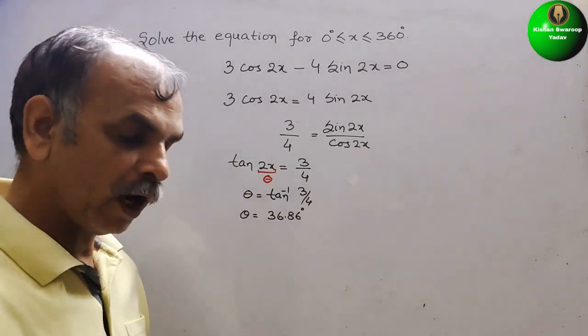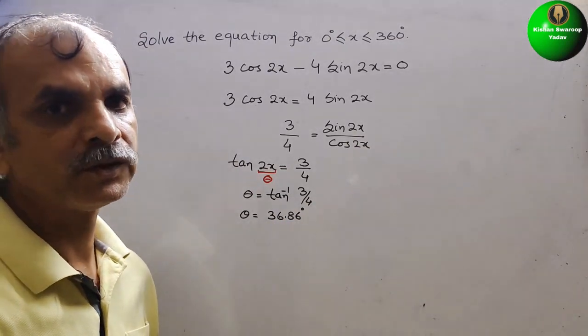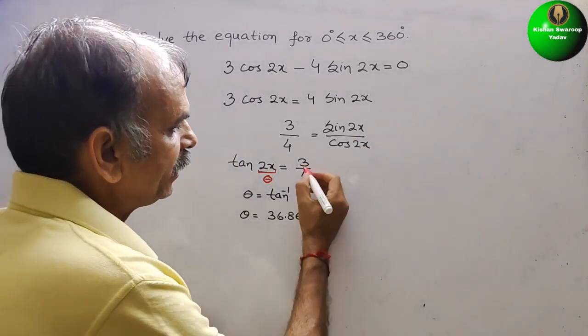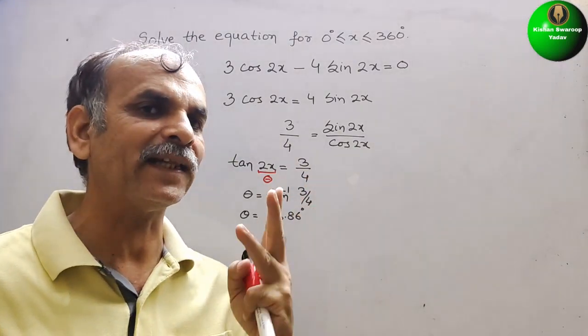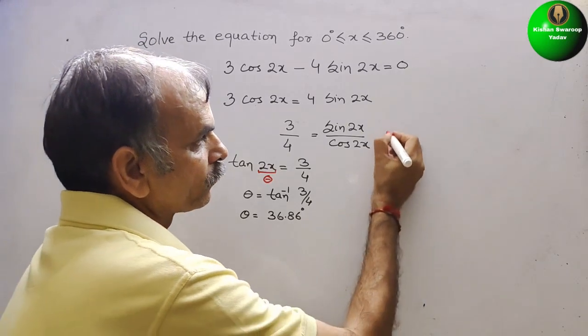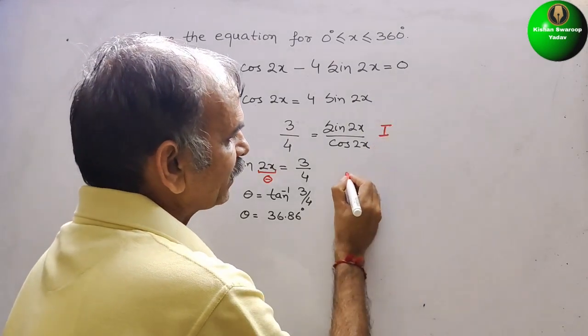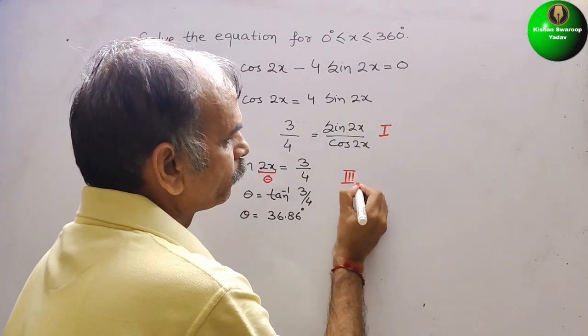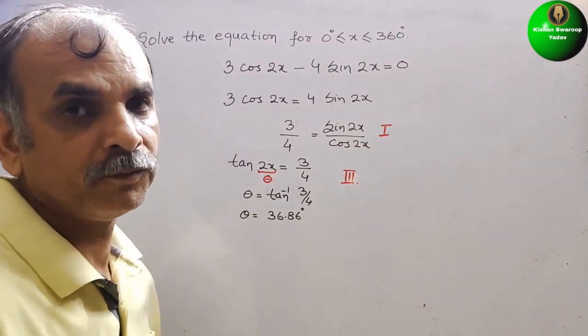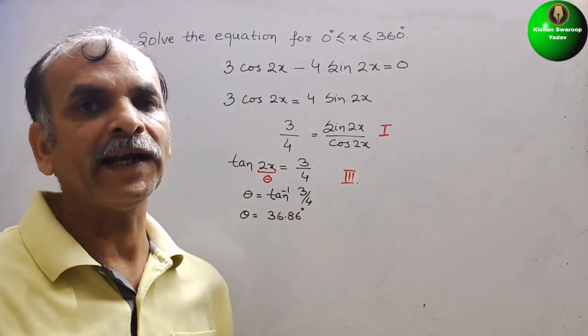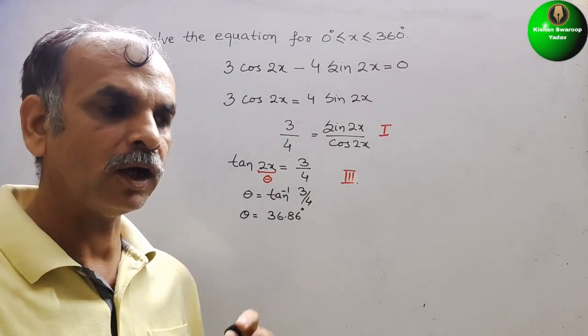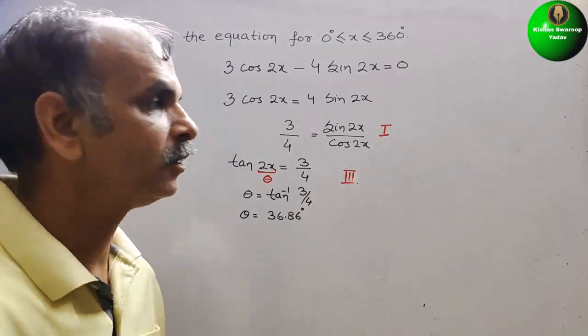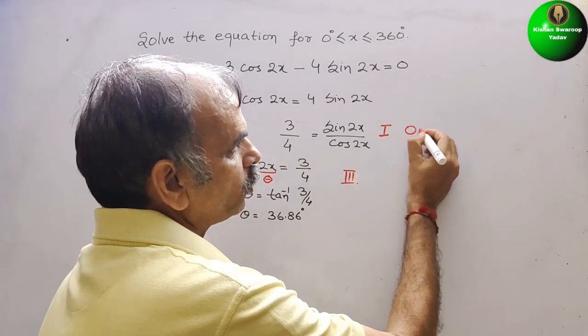So now what we have to do? See that here it is positive. We know that tan is positive in first and third quadrant. First quadrant, how we are writing? Direct angle, or you can say 0 plus theta.